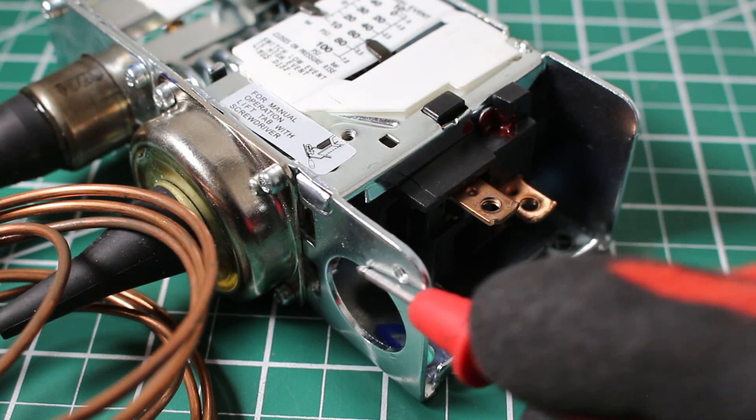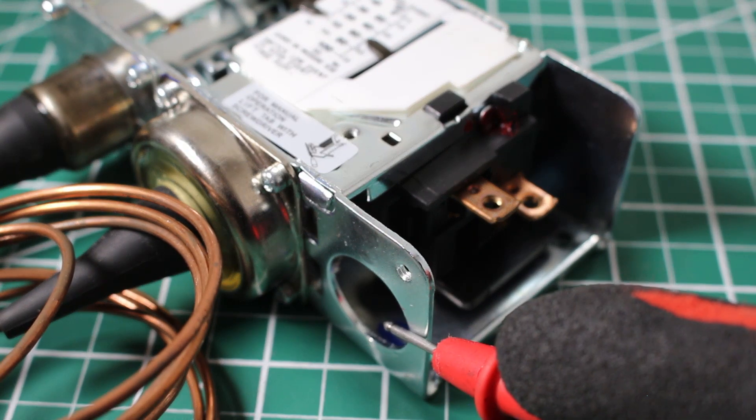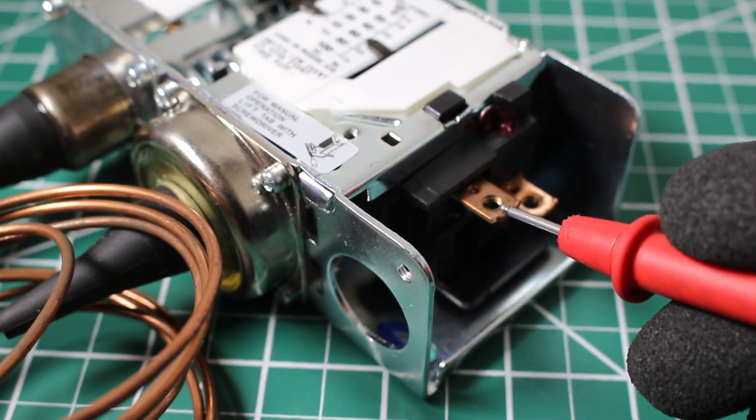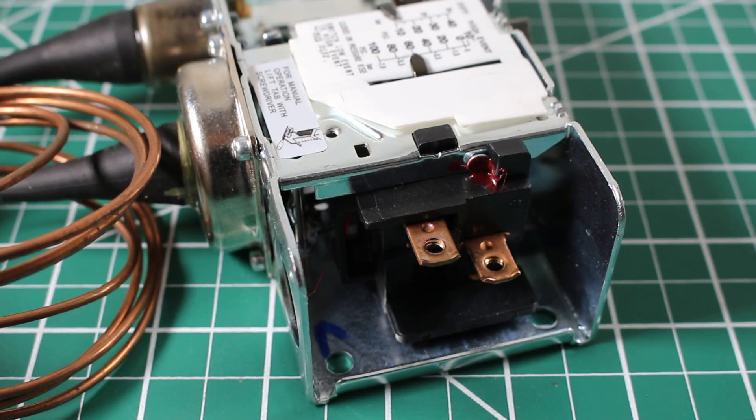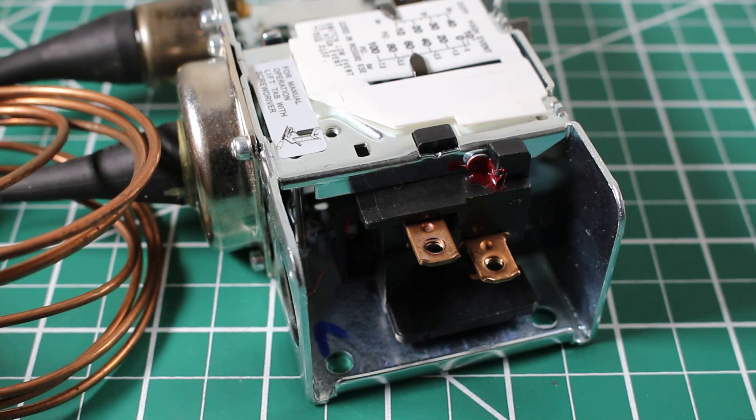If we look here, we have a knockout where we can bring in our electrical wires. And here we have two conductors. A dual pressure control operates with the principles of a switch. And as you can see, we have two conductors. You also will come across some with four conductors. Depending on the model, you will find a single pole single throw switch or a double pole single throw switch.